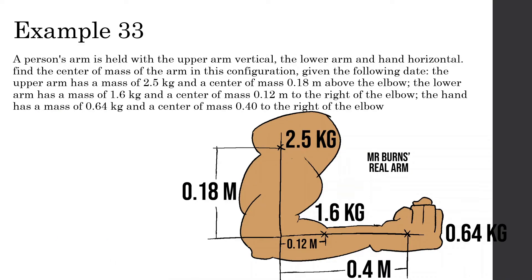This next one is a little more difficult because we have a two-dimensional problem. A person's arm is held with the upper arm vertical, the lower arm and hand horizontal. Find the center of mass of the arm in this configuration. The upper arm has a mass of 2.5 kilograms with center of mass 0.18 meters above the elbow. The lower arm has a mass of 1.6 kilograms with center of mass 0.12 meters to the right of the elbow. The hand has a mass of 0.64 kilograms with center of mass 0.4 meters to the right of the elbow.